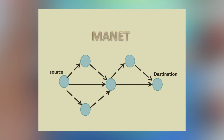So it forms a temporary network for data transmission from source to destination. There may be any number of intermediate nodes between source and destination, and the data transmission takes place through the optimal path in the MANET.